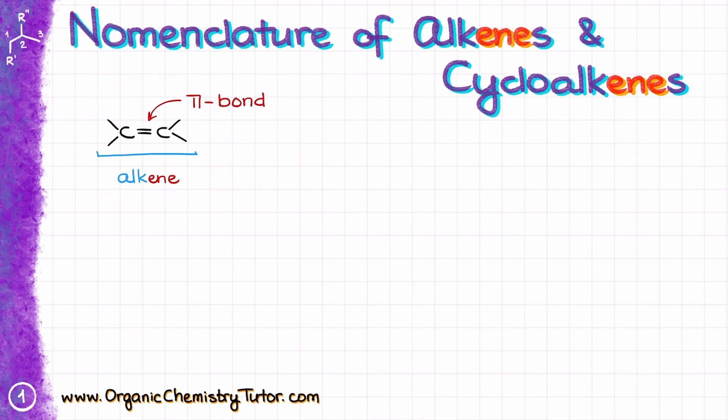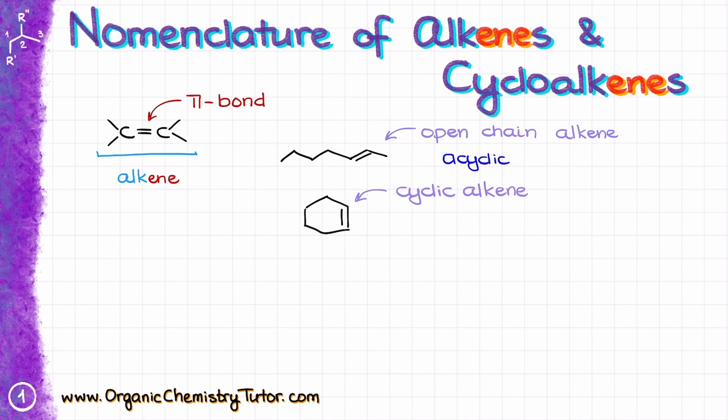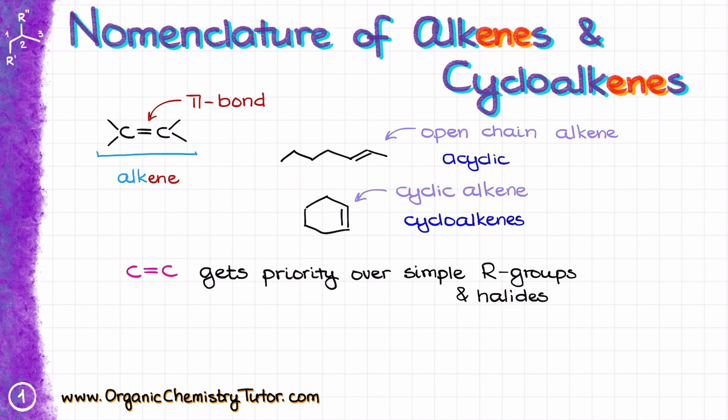When it comes to alkenes, we are going to distinguish between open chain alkenes — acyclic molecules — and cyclic alkenes, which in nomenclature terms we refer to as cycloalkenes. From the perspective of priorities, the double bond gets priority over simple R groups and halogens. Whenever you are numbering your molecule, you will have to prioritize giving the lowest possible numbers to the double bond rather than to other groups.